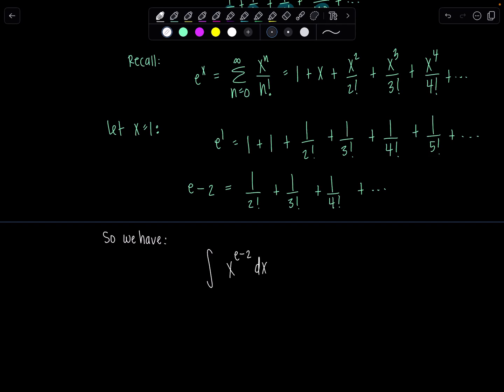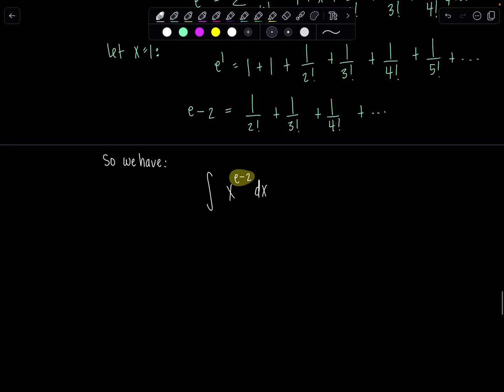The worst is definitely over because now e minus 2, that's just some constant, so you just apply your normal rules when we're taking an antiderivative. We add 1 to the exponent, divide by the new exponent. So if I add 1 my new exponent is going to be e minus 1. Divide by that new exponent and then don't forget your plus C.